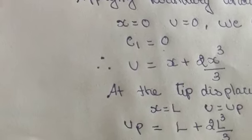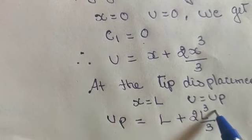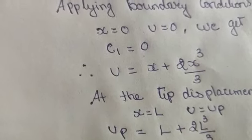Therefore you will get u suffix p equals L plus 2L cubed by 3. Thank you.